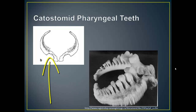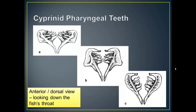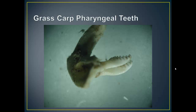Sometimes you have comb-like teeth, as in the left picture. But as I said, it's in the cyprinids where we use these a lot to identify what species we have. These are some more images from Fishes of Tennessee. This is the anterior dorsal view — we're looking down the fish's throat to orient ourselves to where these are within the fish. Here we see pharyngeal teeth with characteristic grooves that identify this as coming from a grass carp.